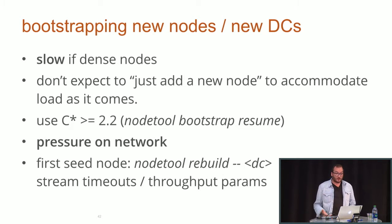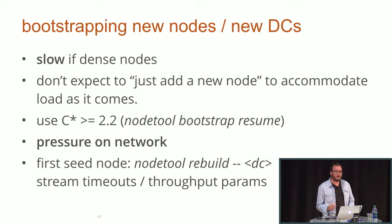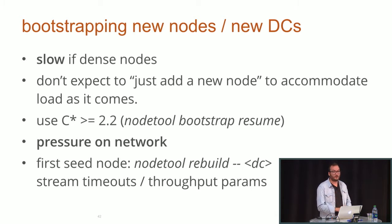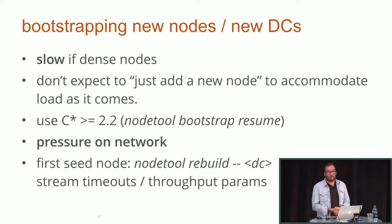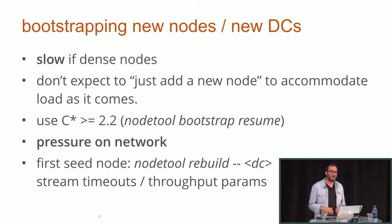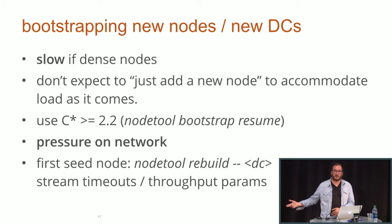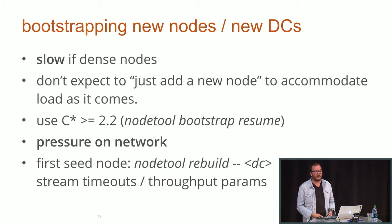Bootstrapping new nodes: if you have a lot of data it's really slow. Do not expect to handle seasonal traffic peaks by just bootstrapping nodes — that's not going to work. What you have to do is plan your growth and plan your cluster to always have about 30-40% of extra resources available, also for operations like repairs. You will not be able to just add nodes during a traffic peak.